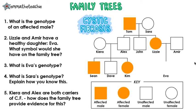The best way to understand family trees is to give some questions a go. So pause and try them, then press play when you're ready to go through them. Always start by looking at the key. Number one: what is the genotype of an affected male?